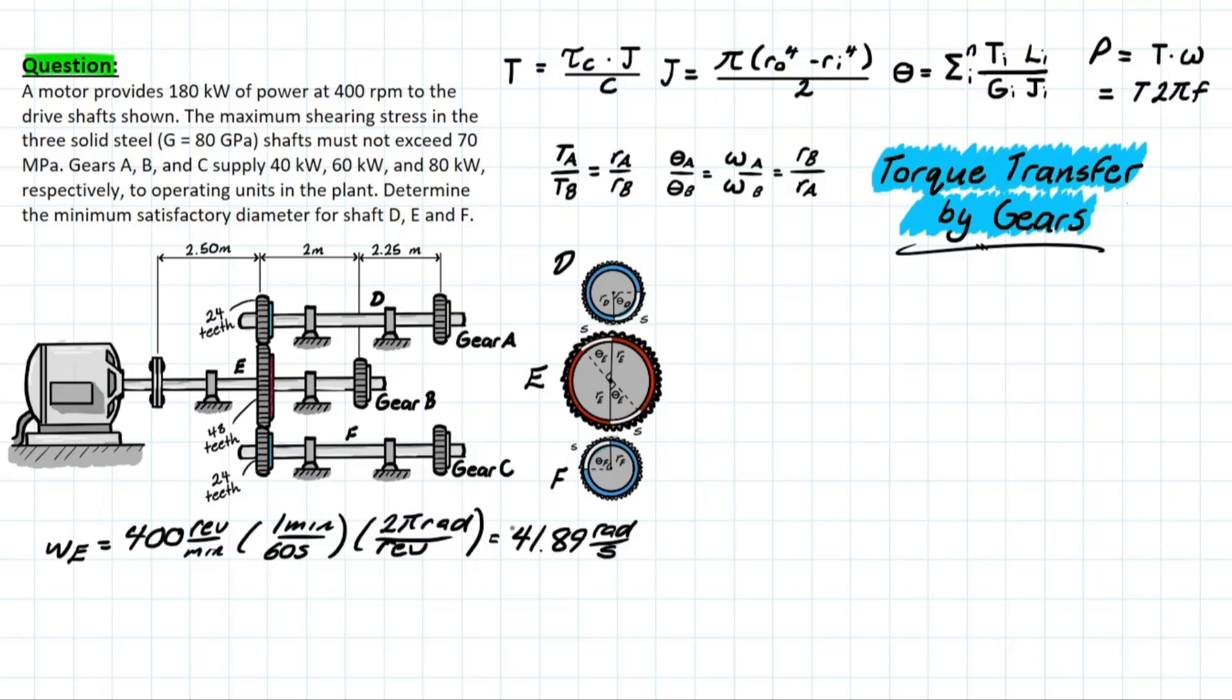The next thing we need to do is think back to what we have in this problem and what we can use together to solve for new unknowns. We can recall that the power formula is equal to torque times angular velocity. We just solved for angular velocity in shaft E, and we know that the power generated by the motor connected to shaft E is 180 kilowatts. So, rearranging this formula, we can get the torque.